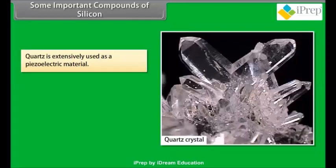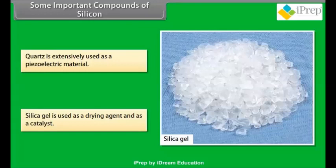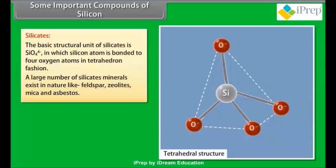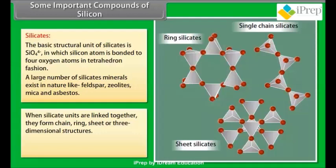Quartz is extensively used as piezoelectric material. Silica gel is used as drying agent and as a catalyst. Silicates: the basic structural unit of silicates is SiO4^4- in which silicon atom is bonded to four oxygen atoms in tetrahedral fashion. A large number of silicate minerals exist in nature like feldspar, zeolites, mica, and asbestos. When silicate units are linked together, they form chain, ring, sheet, or three-dimensional structures. Glass and cement are two important man-made silicates.